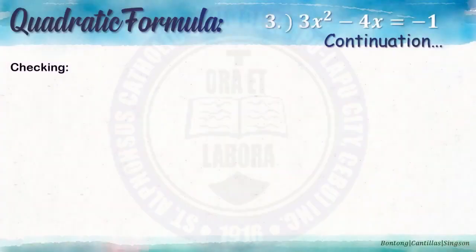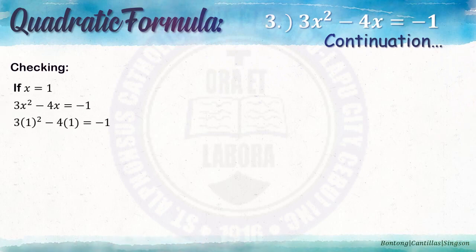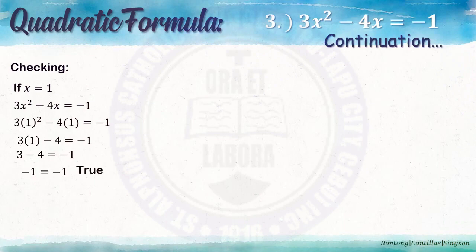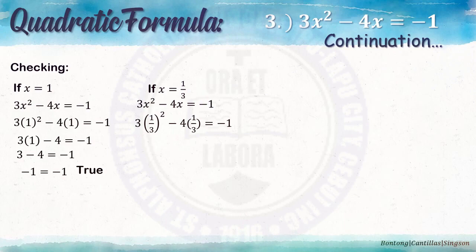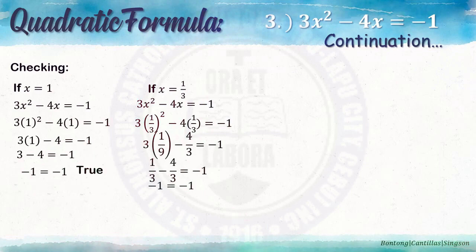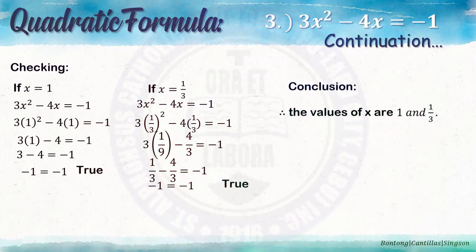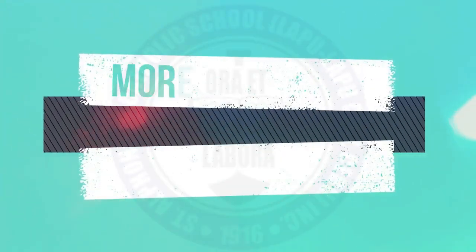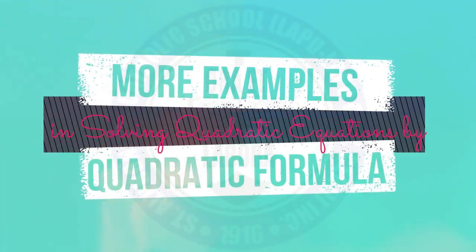Step 5: Checking and conclusion. If x is 1, substitute into the given equation — negative 1 equals negative 1, which is true. For the other value, x equals one-third: substitute into the given equation, simplify, and you get negative 1 equals negative 1 — also true. Conclusion: therefore, the values of x are 1 and one-third.